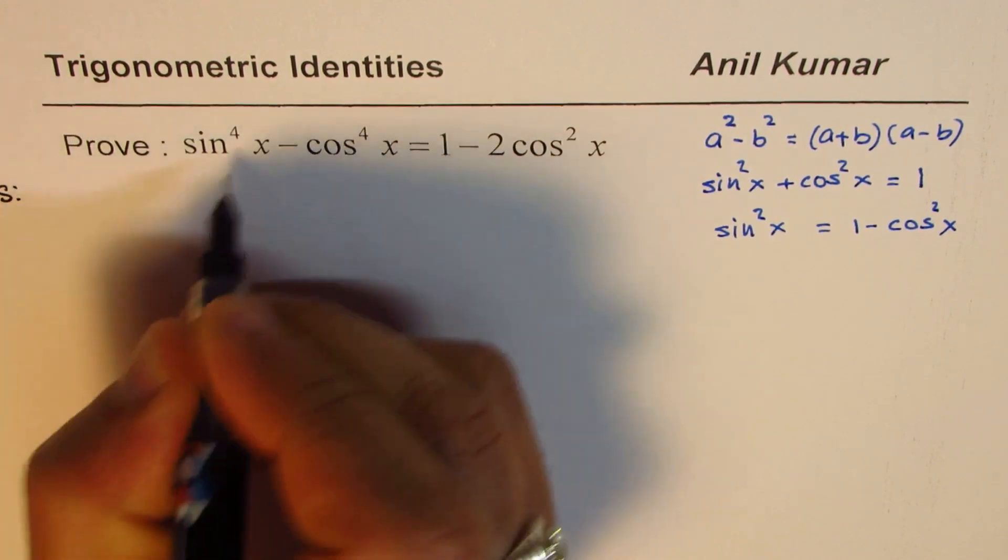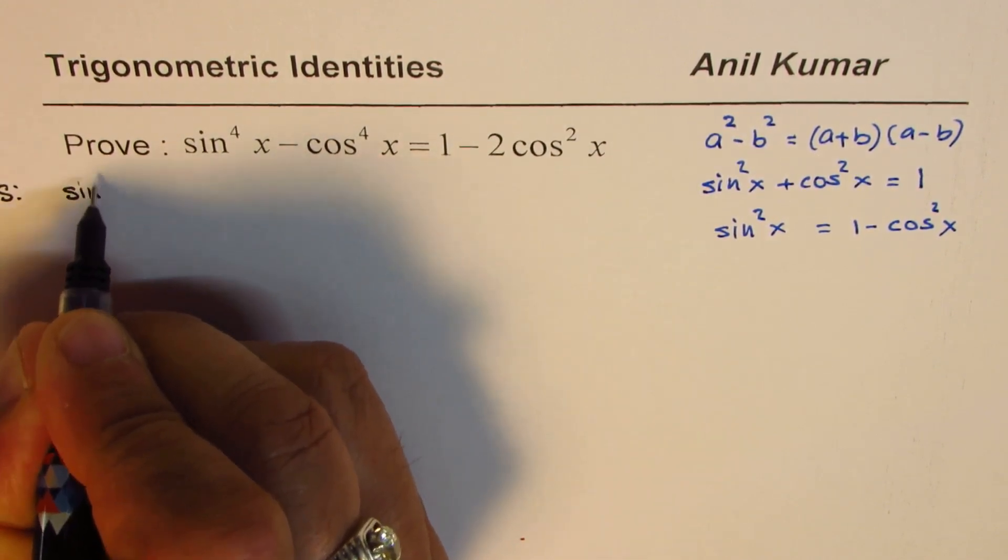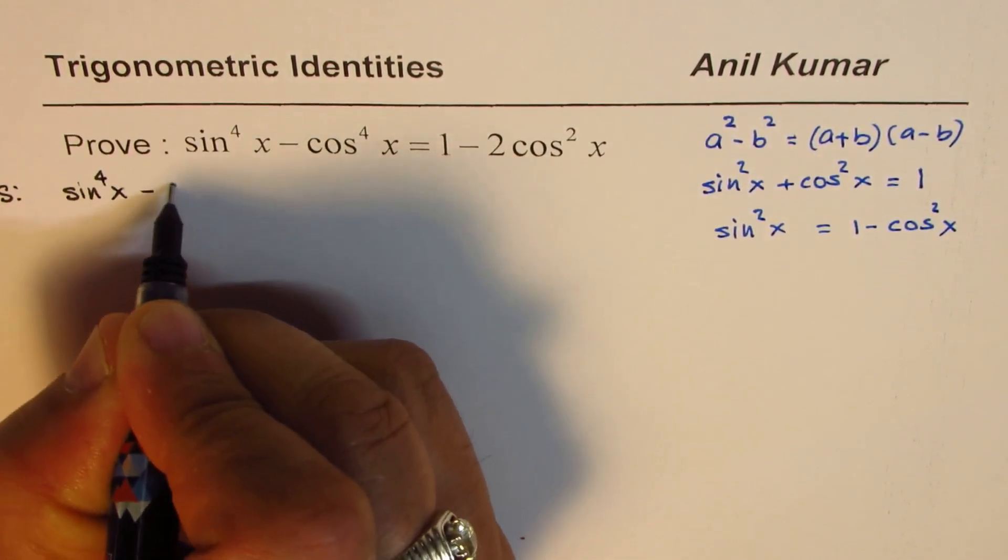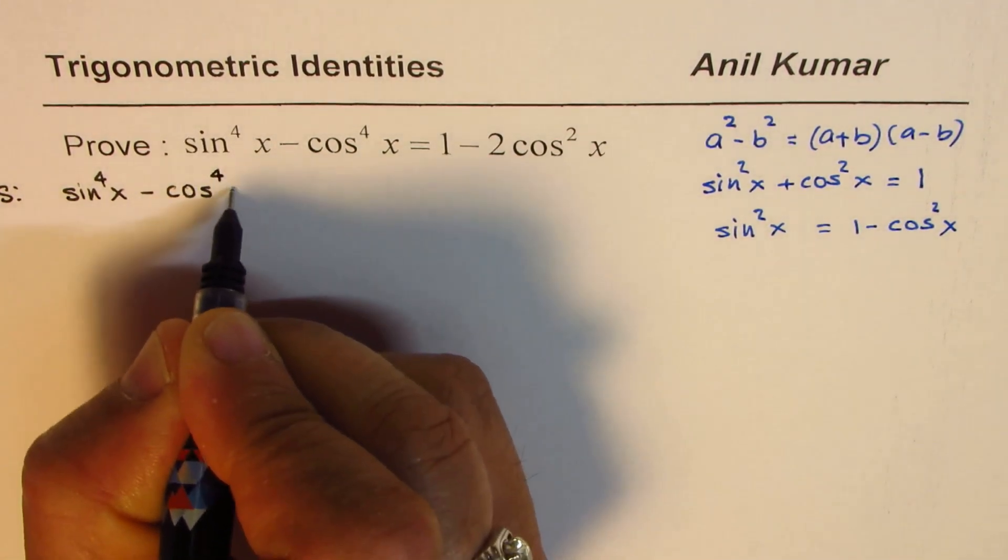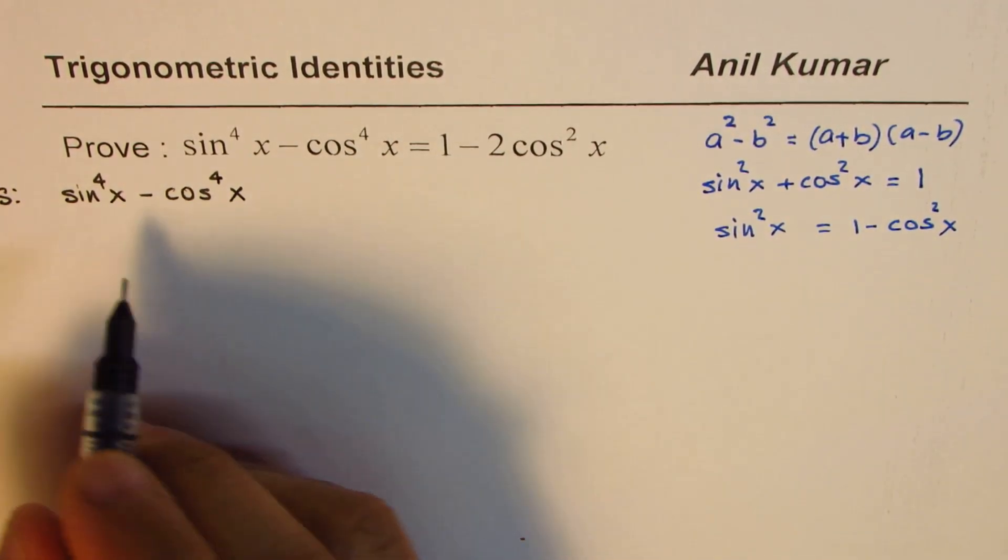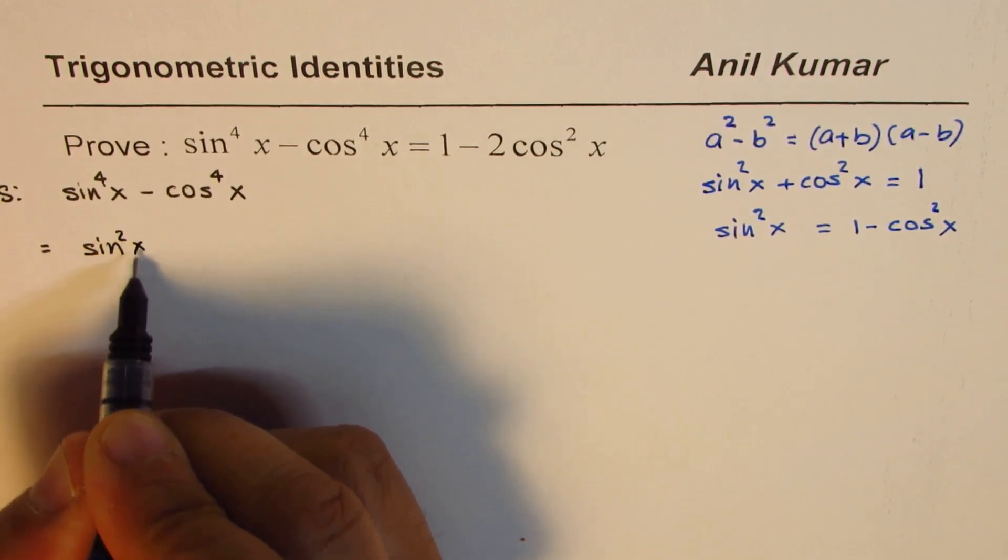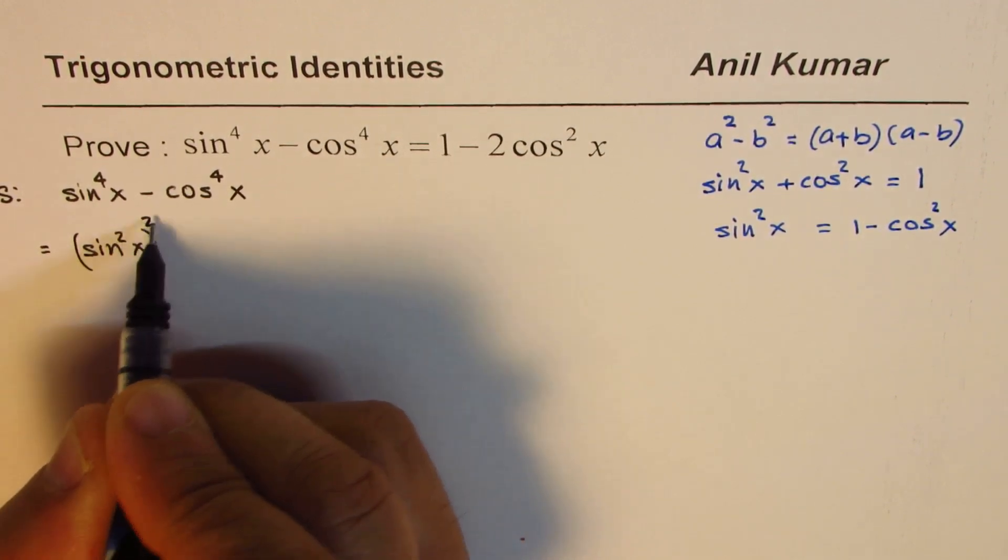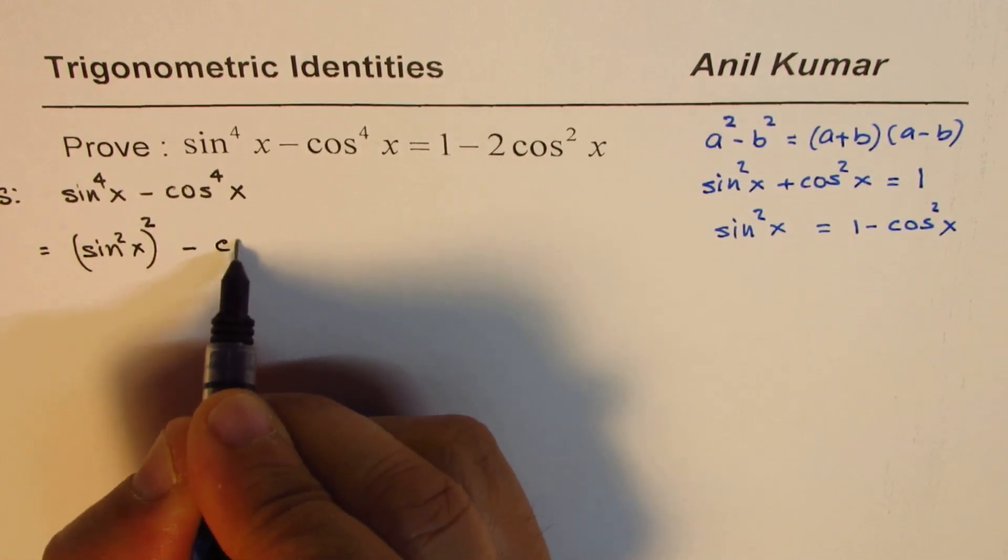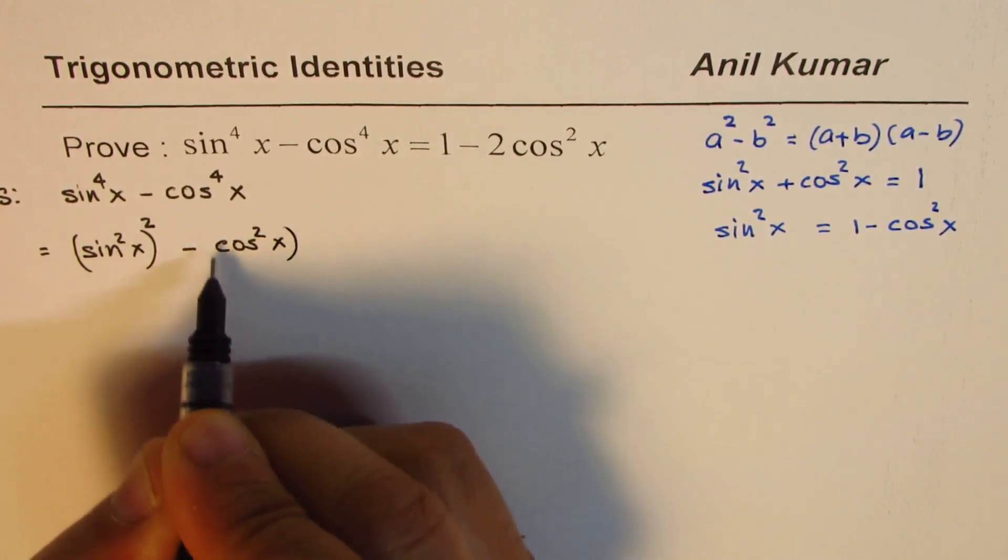So we will begin with the left side which indeed is sin⁴x minus cos⁴x. Now this could be written as (sin²x)² minus (cos²x)².